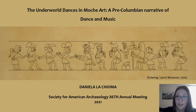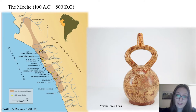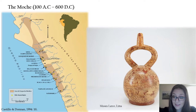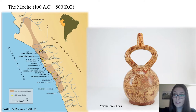I will be presenting a pre-Columbian theme: the Underworld Dances in Moche Art. The Moche occupied the north coast of Peru, approximately between 100 BC and 600 BC. The north coast of Peru is deserted and very dry, crossed by rivers that come down from the Cordillera of the Andes to the Pacific Ocean, forming valleys. The Moche occupied these valleys, and Moche political organization was organized around them — each valley had its own ruler.